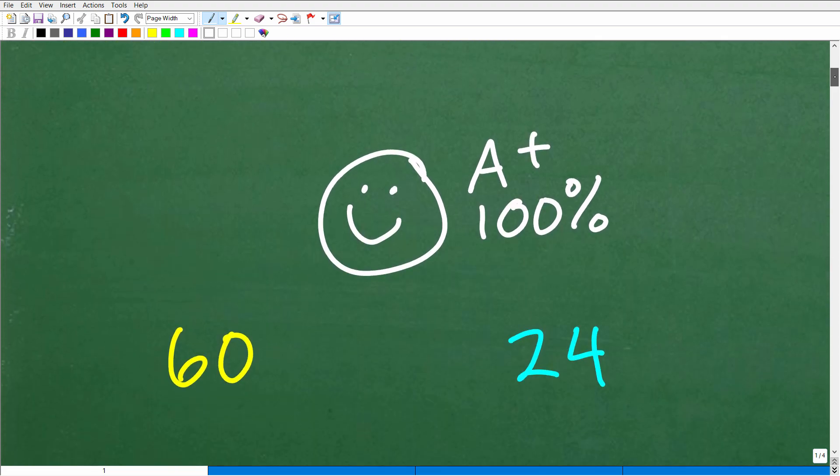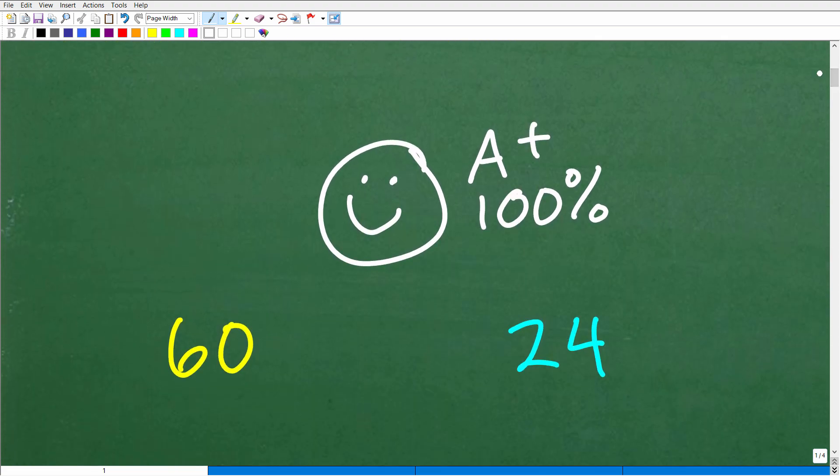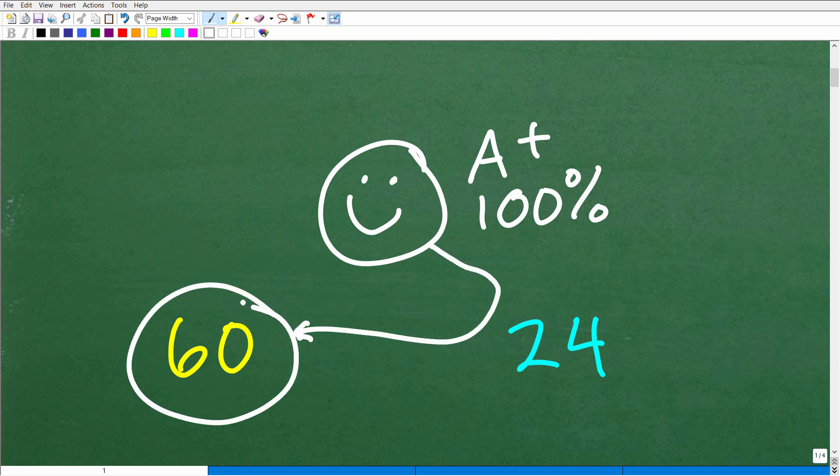Okay, so I have two answers here for you. One is 60 and one is 24. Now, I've got my lovely little happy face here, A+ 100%. I always kind of like to give this out in my videos. Now, which of these answers is correct? Now, most of you out there probably got one answer or the other. Okay, so what is the right answer? Well, let's see. Is it 24? No, it's not. It's actually 60.